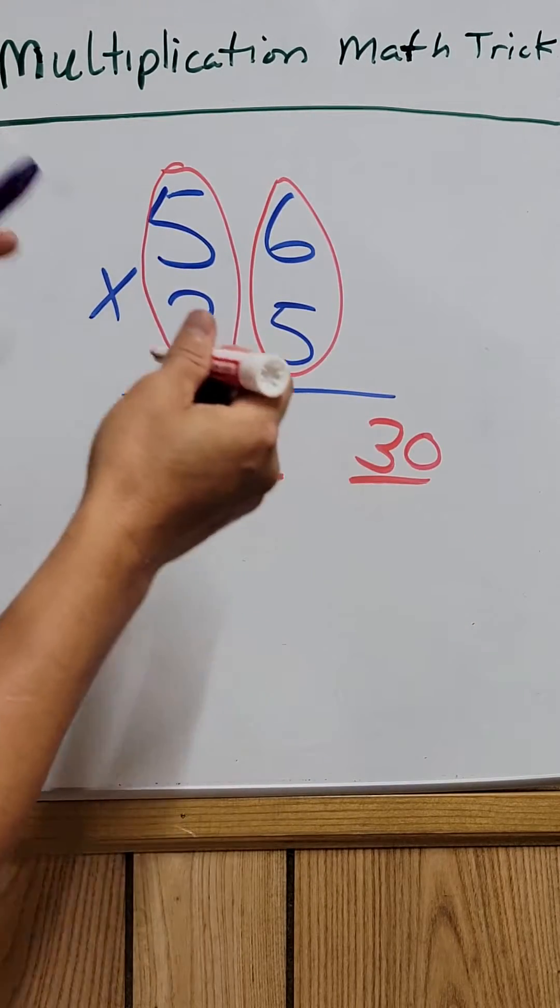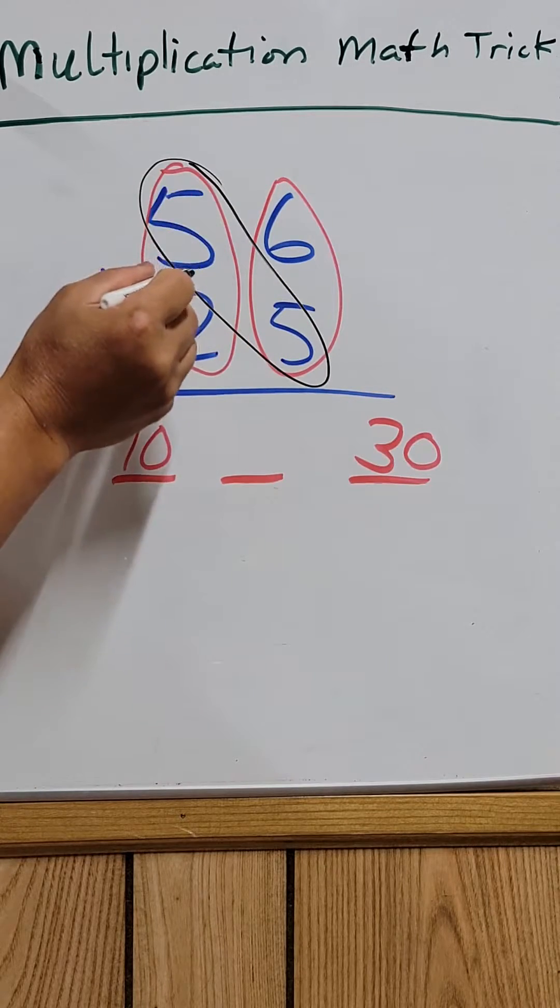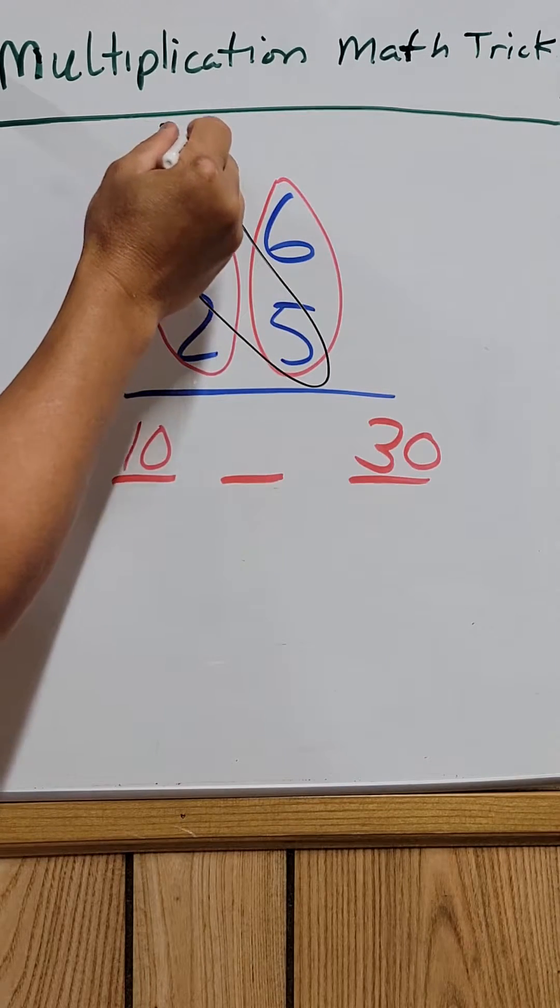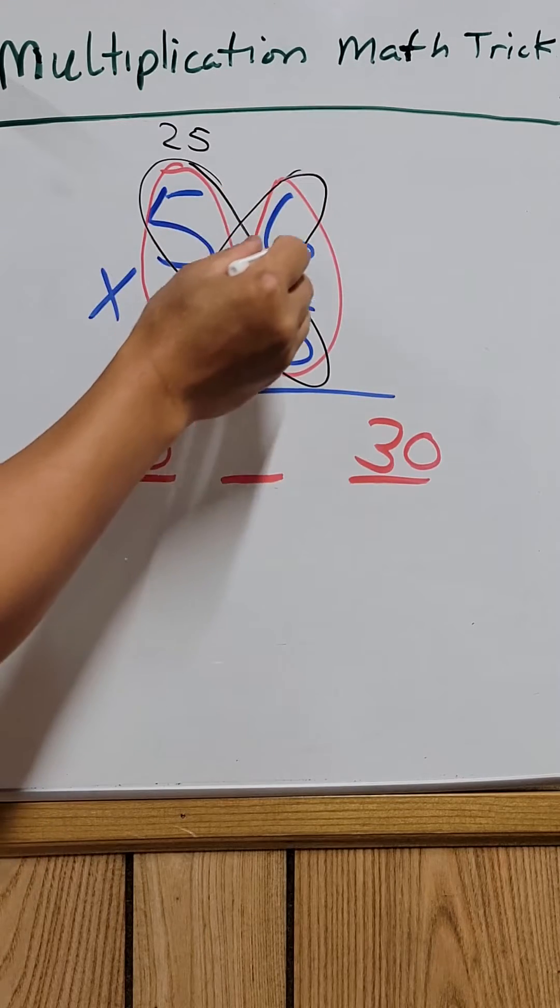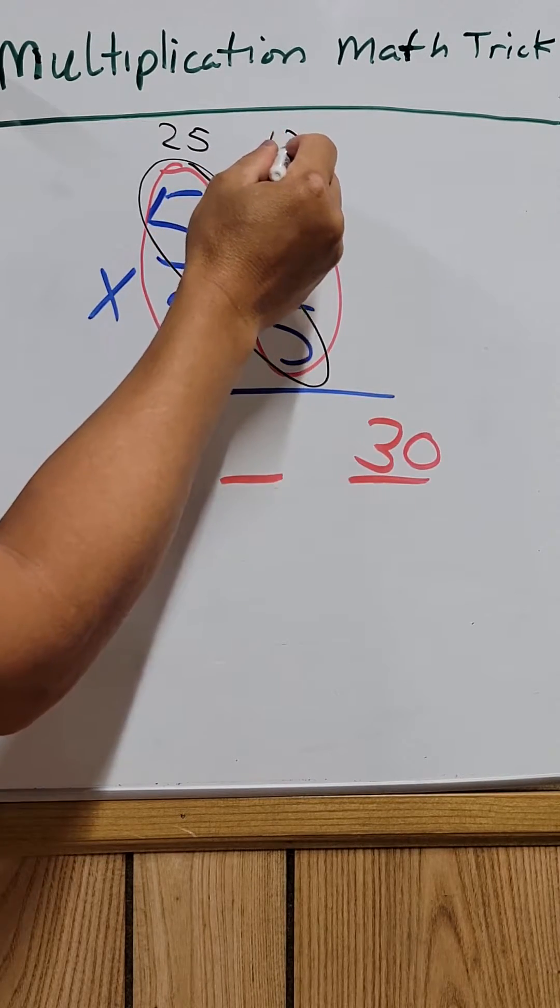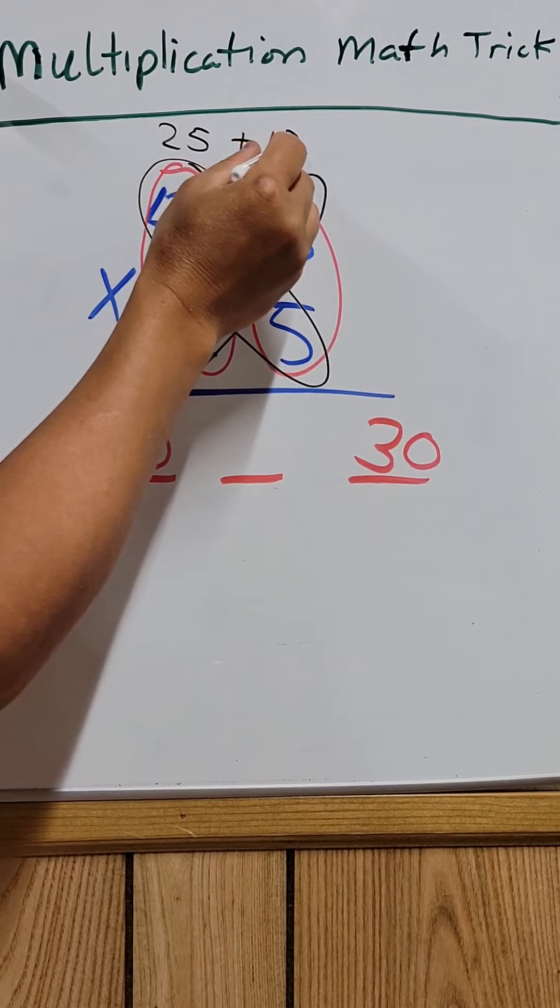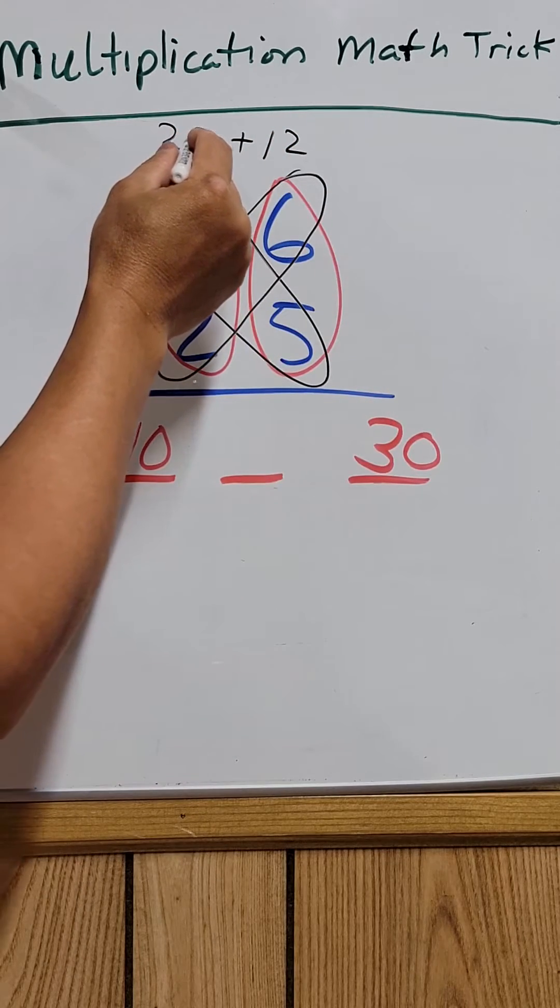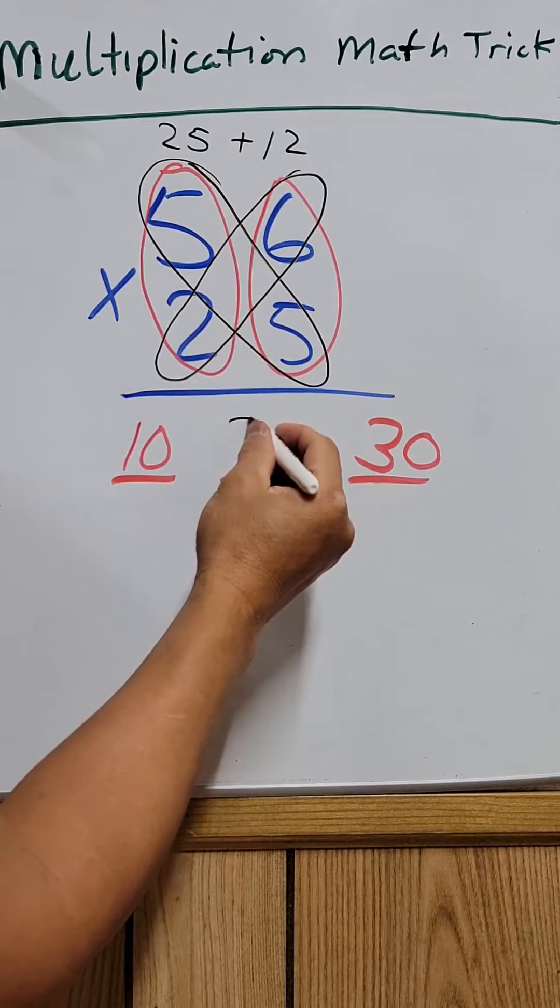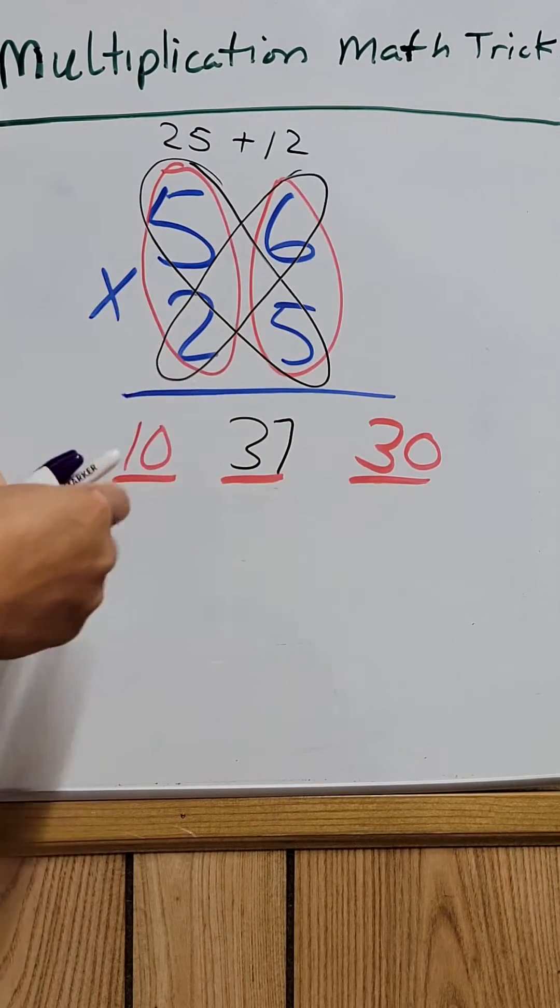And then try to find the middle number. 5 times 5 will be 25. And then 2 times 6 will be 12. And you add these two to get 25 plus 12, the middle number would be 37. So this number would be 37. But you're not done yet.